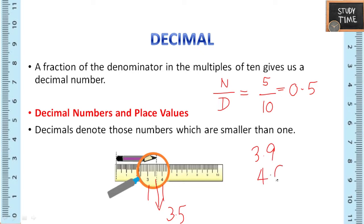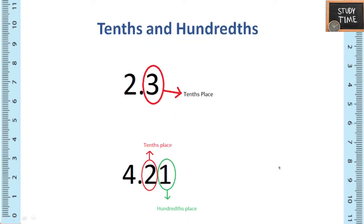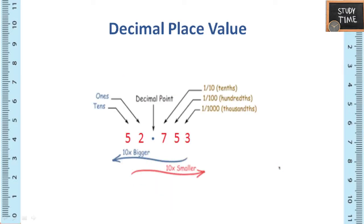So after 3.9 you will be getting 4.0. Tens and hundreds: usually after decimal point you can say that value as tenths place and second as hundredths place. So decimal place value, here the example is 52.753. Before decimal is called as ones and this is tens. So after decimal it is 1 by tens, 1 by hundreds, and 1 by thousands.